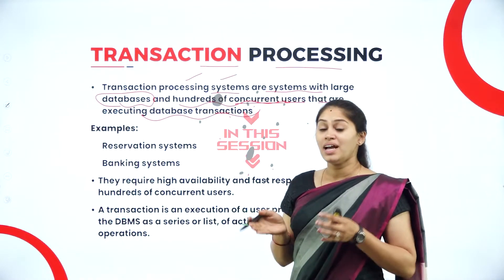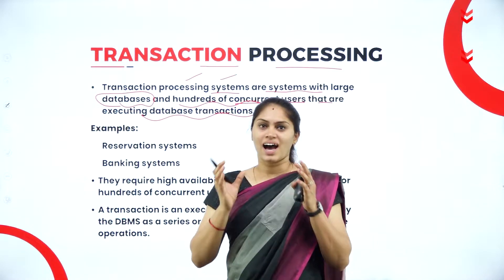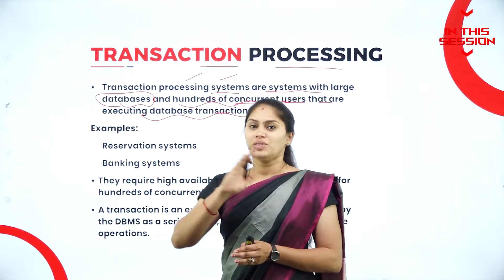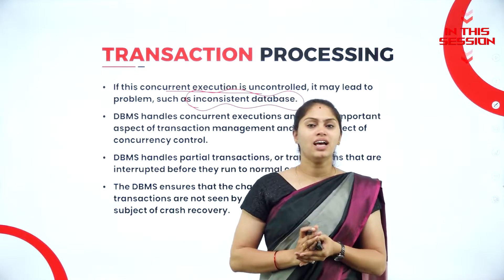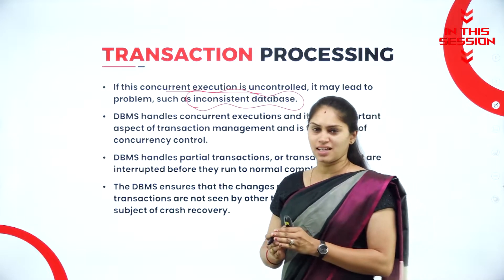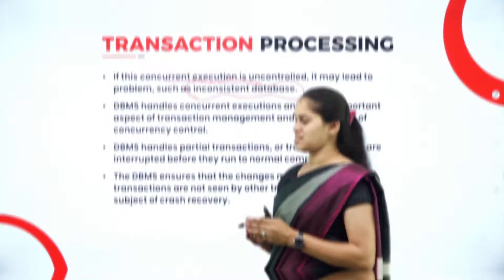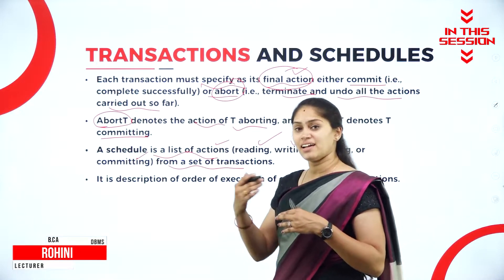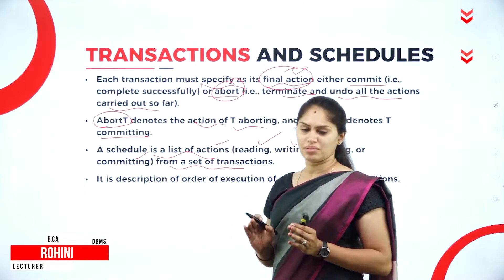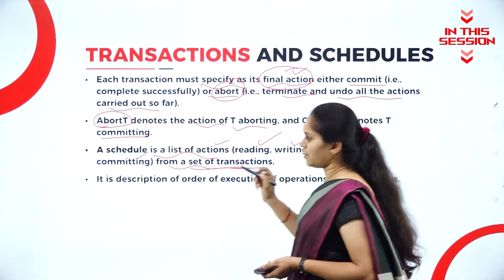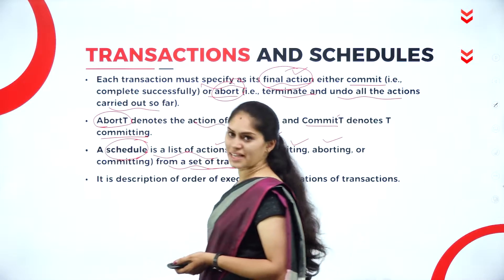Transaction processing system — it will be able to manage large databases with concurrent usage by n number of users. In order to have concurrent control, it is the duty of the DBMS to maintain consistency in the database. When we have a series of actions of reading, writing, aborting, and committing of content on the database from a set of transactions, we can call that a schedule.